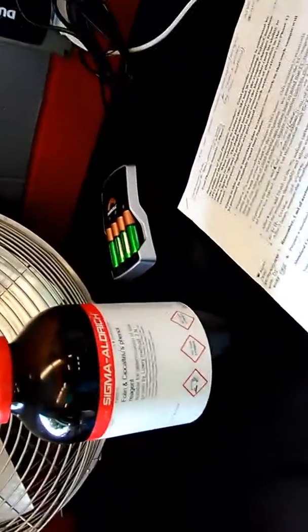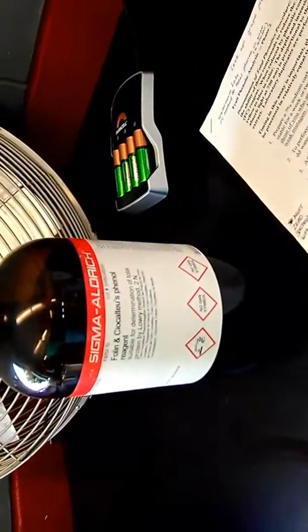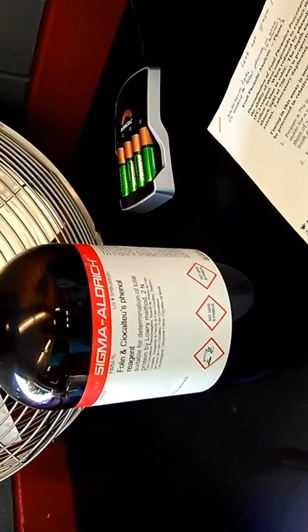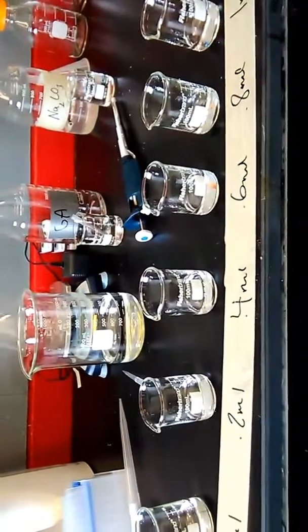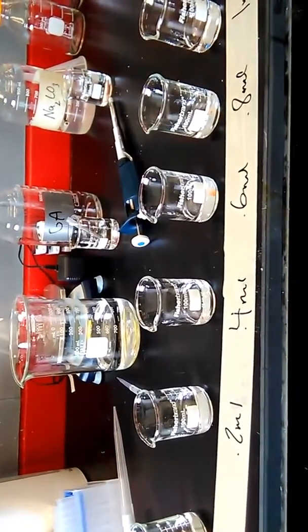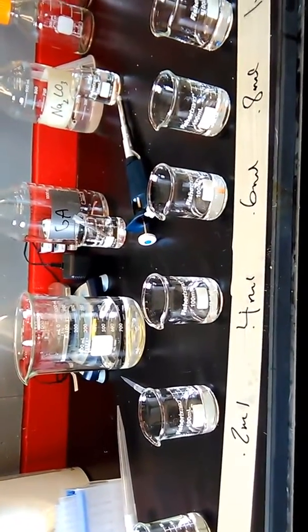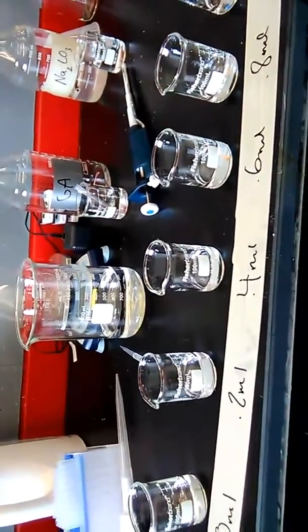We are going to add the folin reagent, the phenyl reagent. And that is going to turn this yellow. And we need to be very careful adding this in because it is a mutagen.